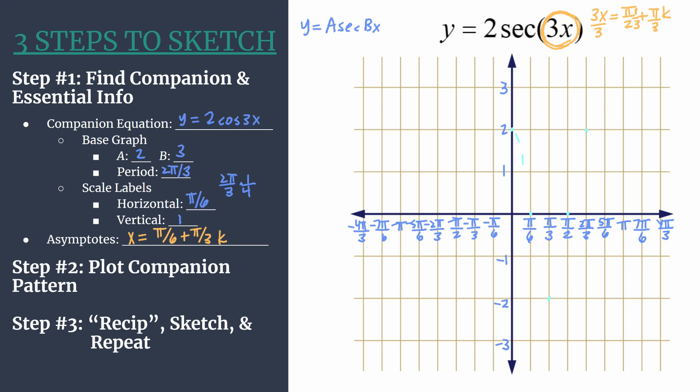You can see here would be the companion equation. Again, make sure you're doing this lightly or in a different color. This is the graph of y equals 2 cosine 3x.